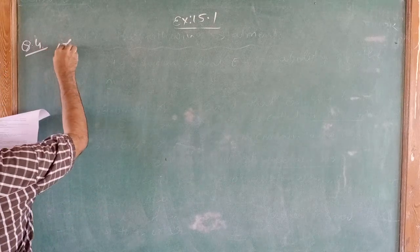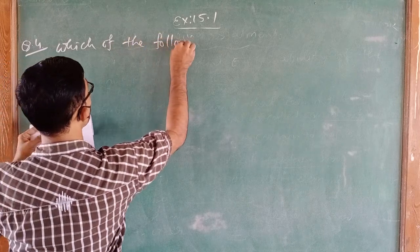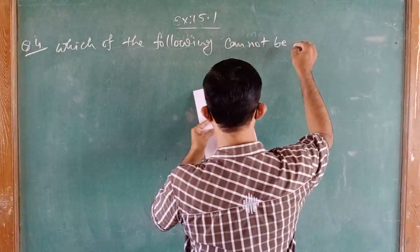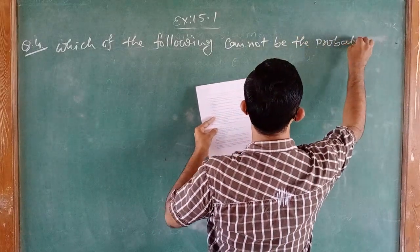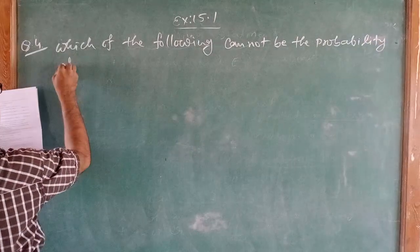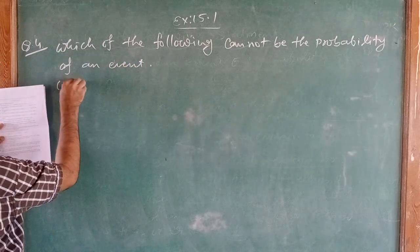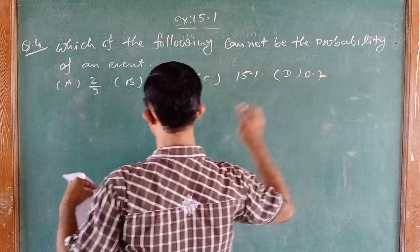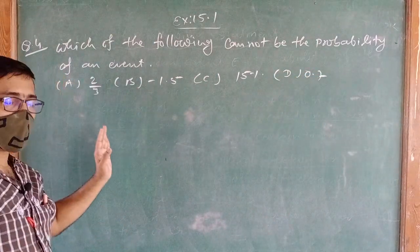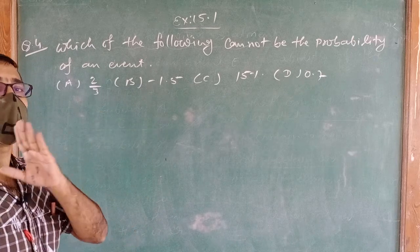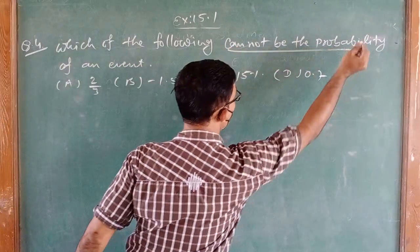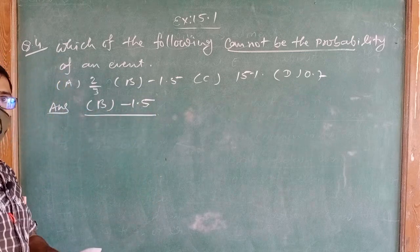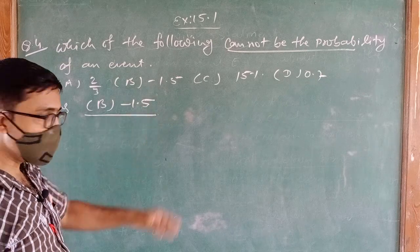Question number 4: Which of the following cannot be the probability of an event? Options: (a) 2/3, (b) -1.5, (c) 15%, (d) 0.7. Since probability values must lie between 0 and 1 and can never be negative, the answer is option (b) -1.5.